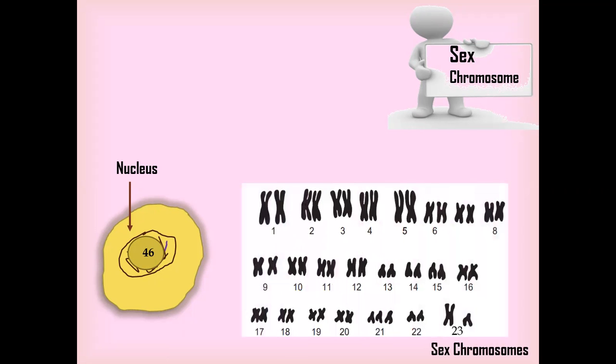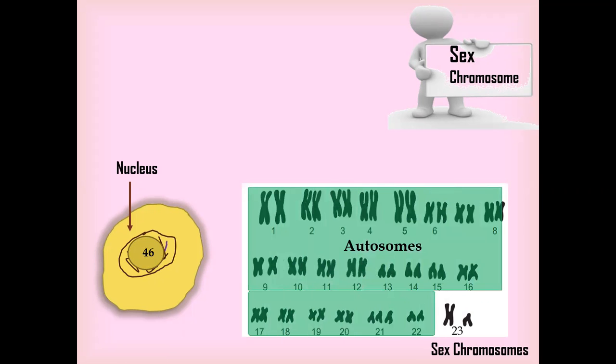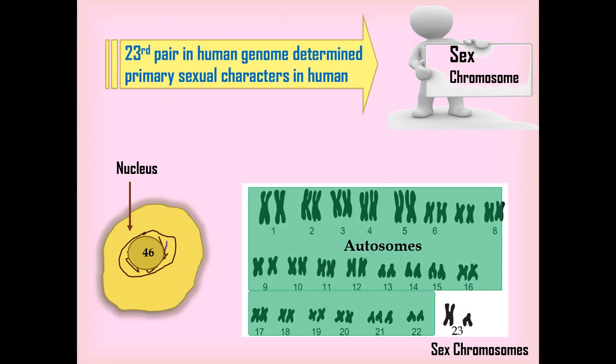The human genome contains 46 chromosomes in the nucleus. These 46 are present in the form of pairs. These 23 pairs contain 22 pairs of autosomes, which provide information for formation of body characteristics, while the 23rd pair provides information for formation of primary sexual characteristics in male and female.